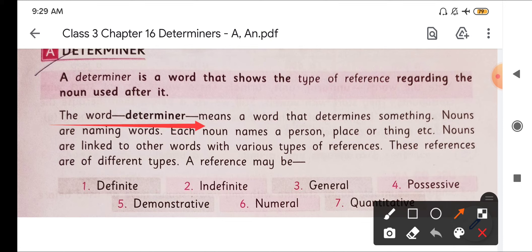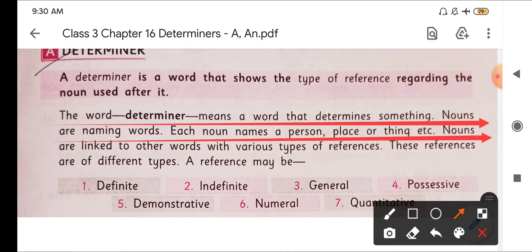The word determiner means a word that determines something. Nouns are naming words. Each noun names a person, place or thing. Nouns are linked to the other words with various types of reference. These references are of different types. A reference may be.